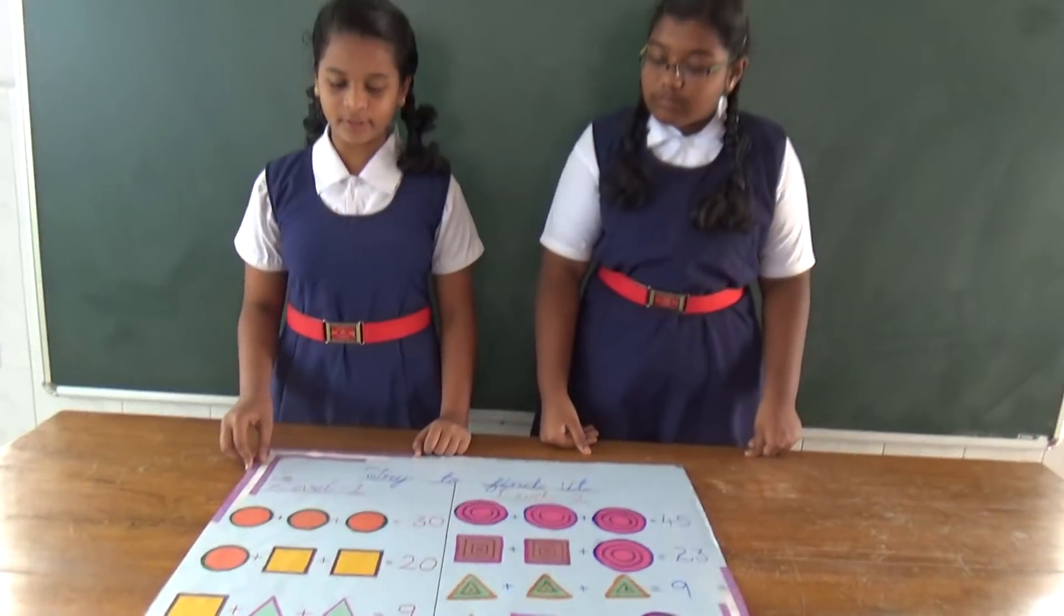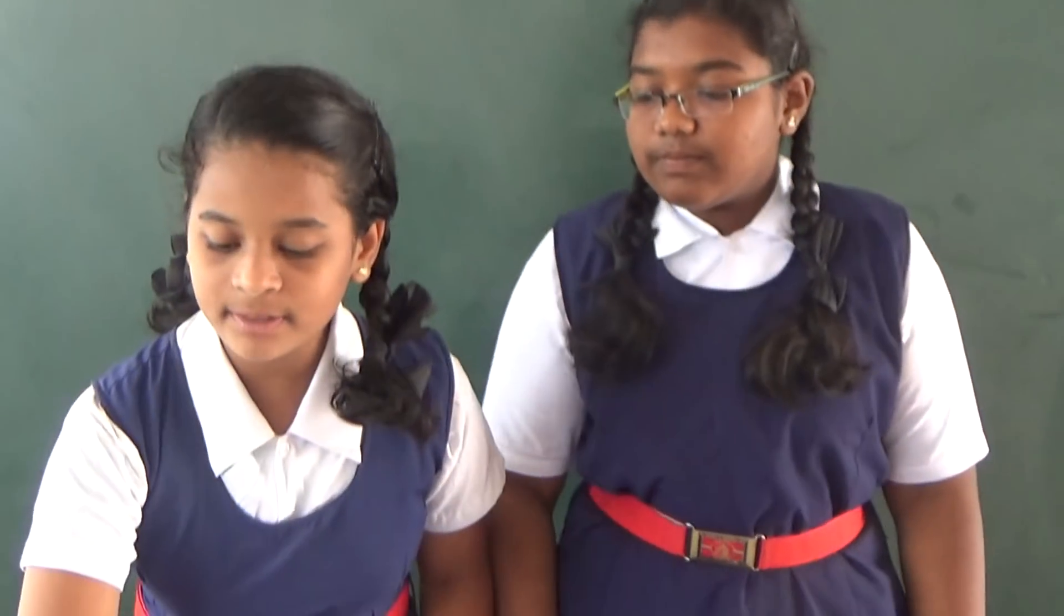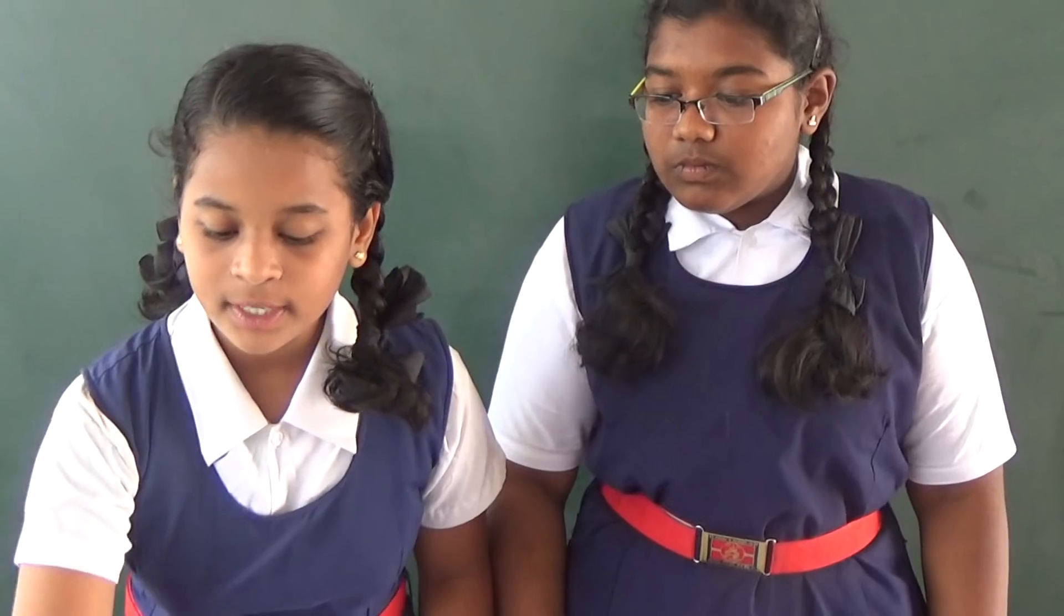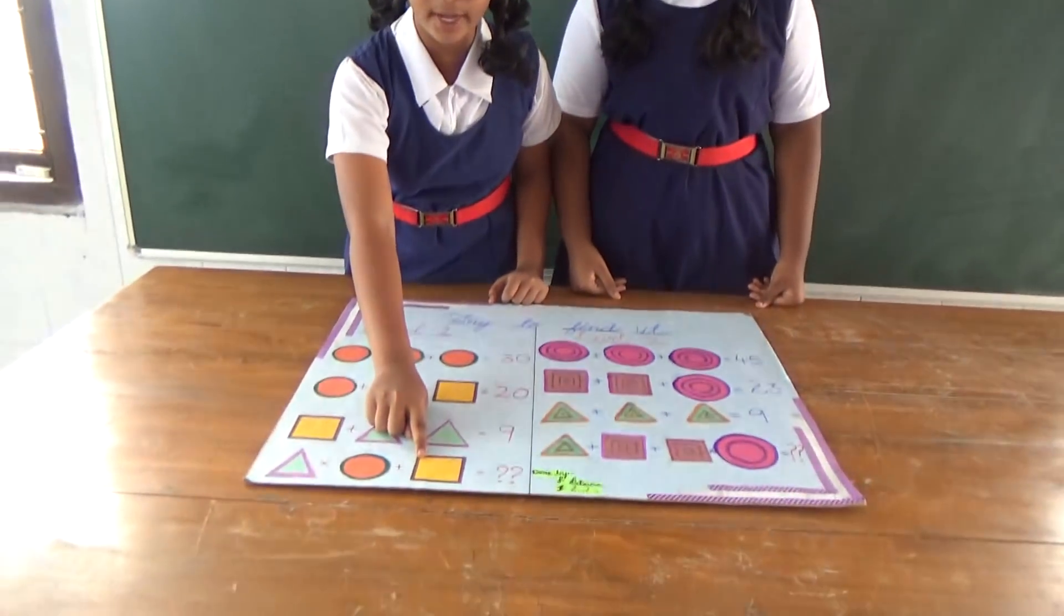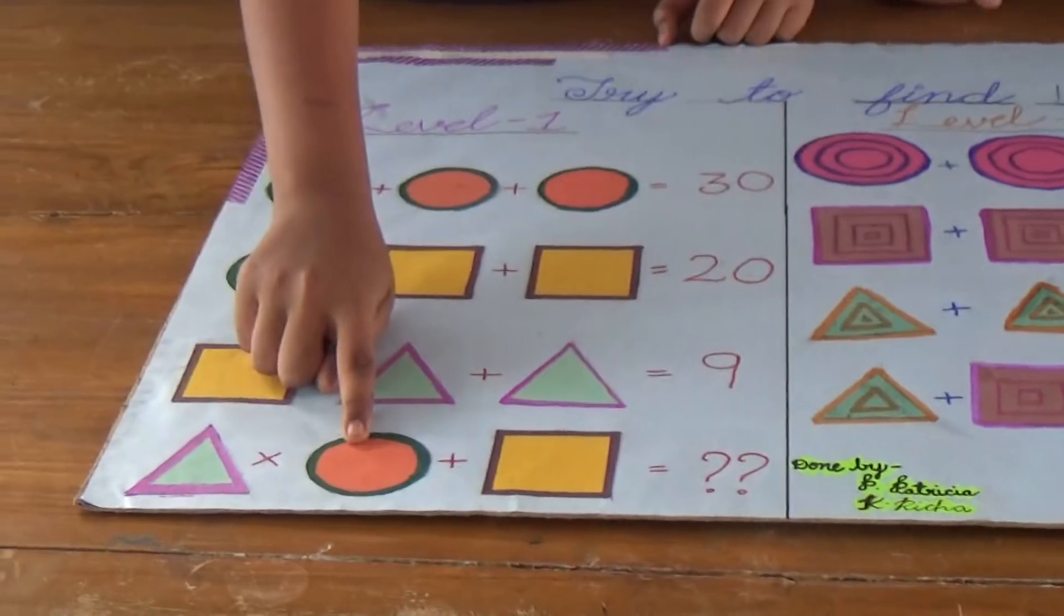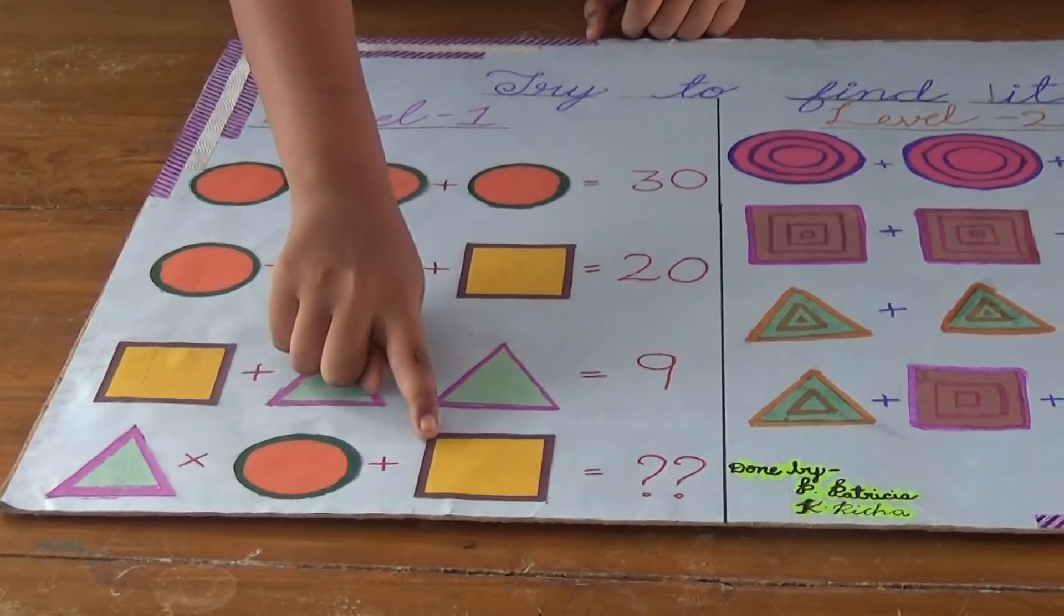When you see this, you can find out the values. We got the triangle's value as 2, the circle's value as 10, and the square's value as 5. So 2 times 10 is 20, and 20 plus 5 is 25.